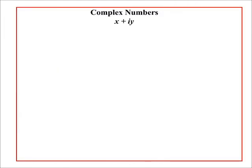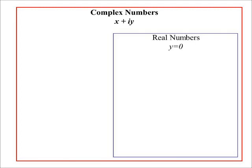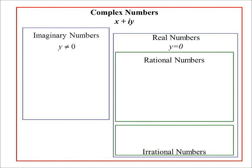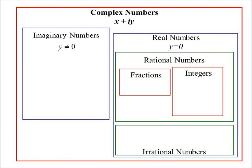The big set of complex numbers contains every number we could possibly think of. So far you've just been working in the real numbers — that's when y = 0. There's another group you haven't dealt with yet: the imaginary numbers, when y ≠ 0. There's no overlap between the two. Inside the real numbers, we have rational numbers — the ones we can write as fractions — and irrational numbers. Inside the rationals we have fractions and integers.